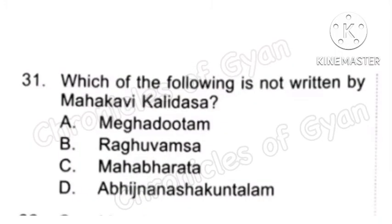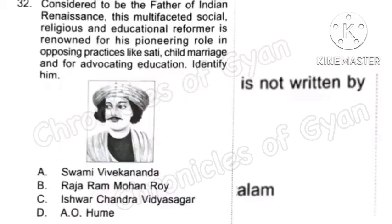Question 31: Which of the following is not written by Mahakavi Kalidasa? Options A, B and D are written by Mahakavi Kalidasa. Option C, Mahabharata, is written by Maharshi Vyasa. So the correct answer is Option C, Mahabharata.